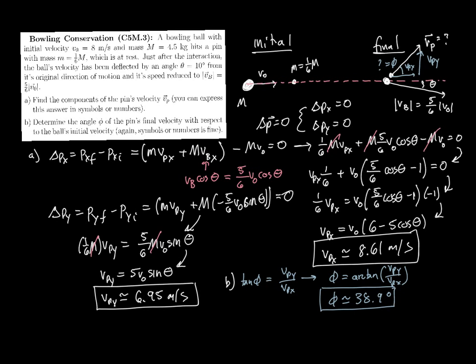The upshot here is that this is simply a conservation of momentum problem between two objects. We know it's conservation of momentum because they interact and transfer momentum. The key steps were identifying the initial and final states, being careful with components and negative signs, and applying delta p equals zero separately in x and y for the entire system. I hope that was helpful — thanks for watching and I'll see you next time.